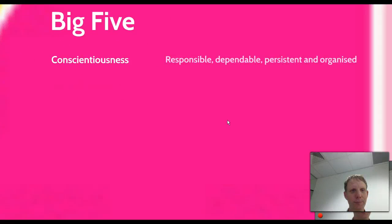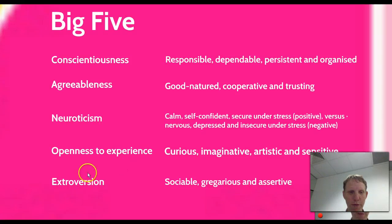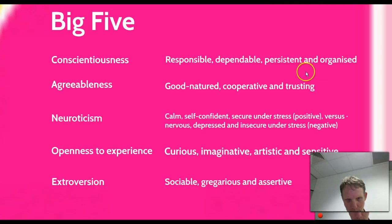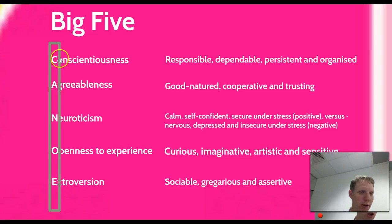The Big Five is a much more reliable measure. We're all familiar with extroversion and introversion — party types for extroverts, bookish types for introverts. The five factors can be remembered through the acronym OCEAN: Openness, Conscientiousness, Extroversion, Agreeableness, and Neuroticism — or alternatively CANOE.